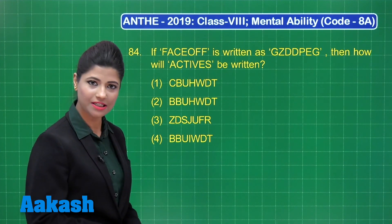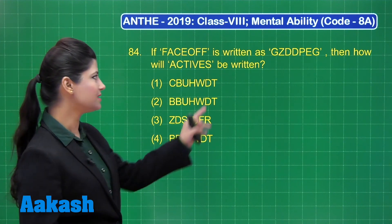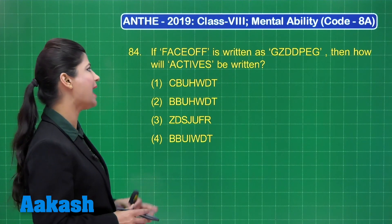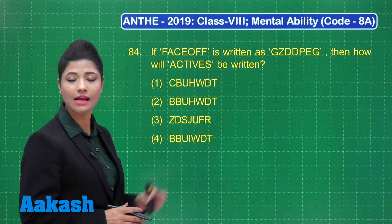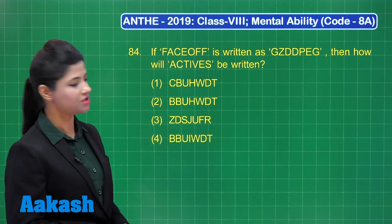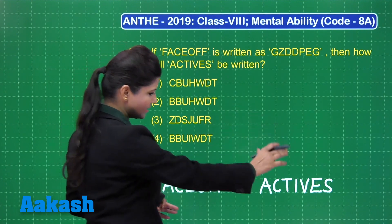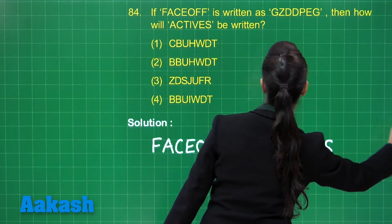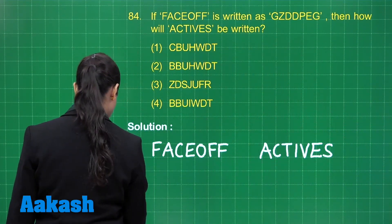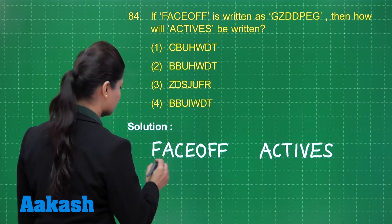Let us take question number 84. It states that if 'face off' is written as GZDDPEG, then how will 'actives' be written out of these four options? Let us proceed with this question. We have the word 'face off' and here 'actives', and face off is written as GZDDPEG.